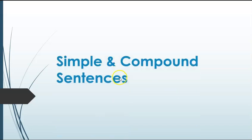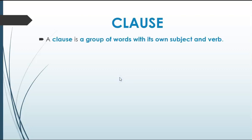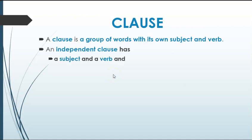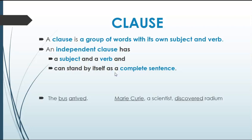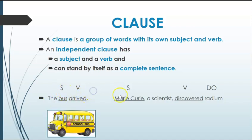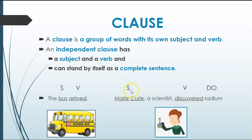This lesson is on simple and compound sentences and is our first lesson looking at clauses. A clause is a group of words with its own subject and verb. An independent clause has a subject and a verb and can stand by itself as a complete sentence. For example, 'The bus arrived' — 'bus' is the subject, 'arrived' is the verb. 'Marie Curie, a scientist, discovered radium' — 'Marie Curie' is the subject, 'discovered' is the verb, 'radium' is the direct object, and 'a scientist' is an appositive.